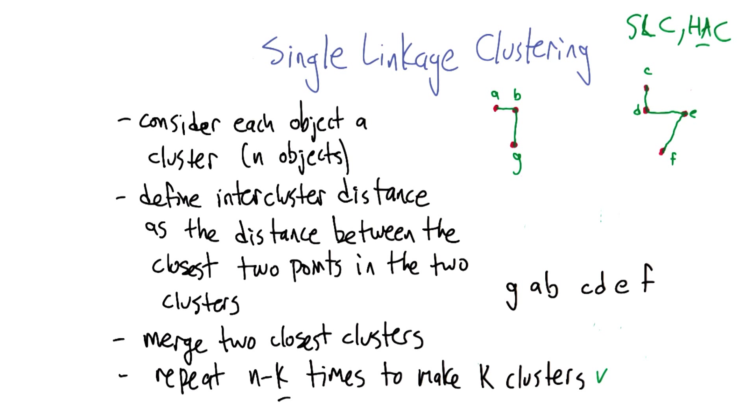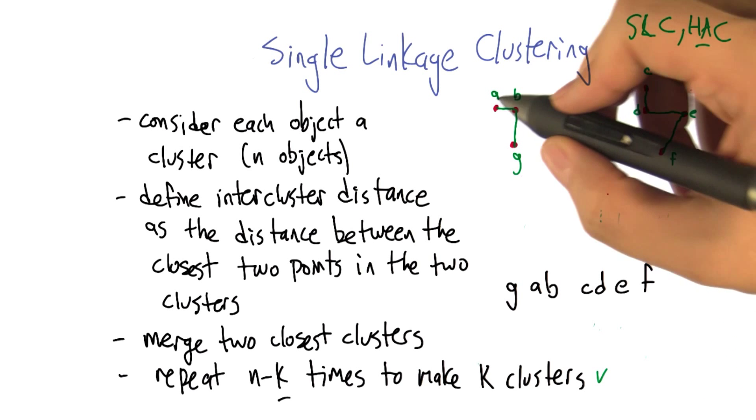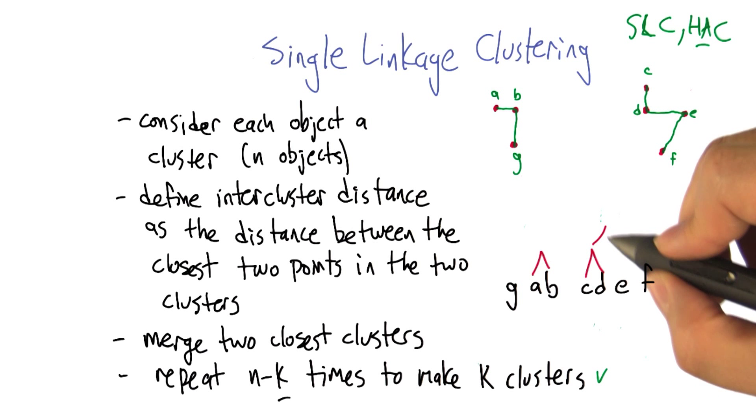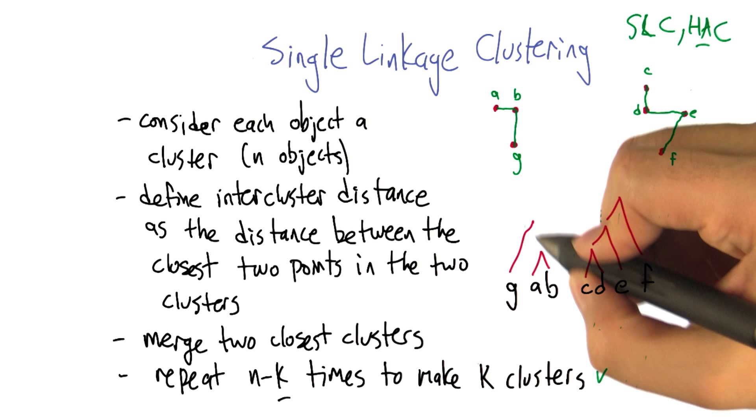So just one other thing to point out quickly. We can represent the series of merges that we did, using a structure that's kind of like this. We merged A and B first, and then we merged C and D. And then we merged, I think D and E. Yeah. Or the C, D, and E. And then we merged E and F. And then we merged G and the AB cluster.